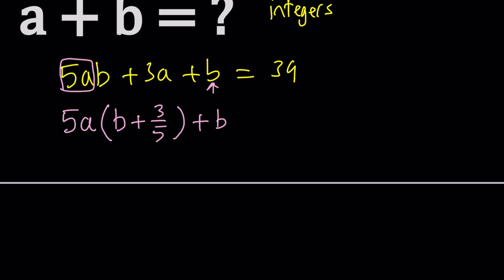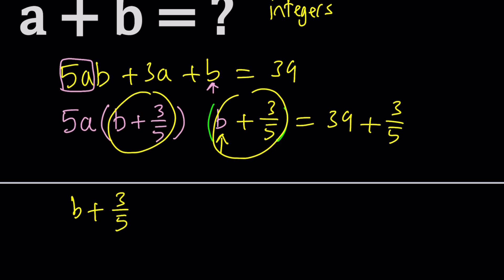Plus b. Now notice that we have b plus 3 over 5 inside the parentheses. So I should have the same thing here, which means I should be adding 3 over 5 to both sides. So far, so good. Now, if you notice that b plus 3 over 5 is a common factor. Let's circle it so you can see this is a common factor. So we can basically factor it out. But what is it multiplied by? Well, it's multiplied by 1 if there is no number. So we're going to put a little 1 here. And then when we take out b plus 3 over 5, we're going to multiply it by 5a plus 1.